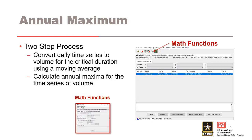With HEC DSS View, there is a two-step process to create the desired annual maximum series. Using DSS View's math functions, first convert the daily record to the critical volume duration, then convert that new record to an annual maximum series.